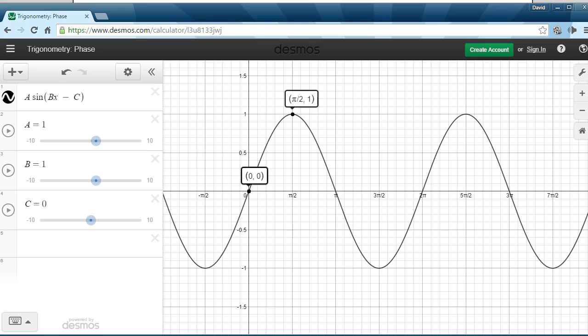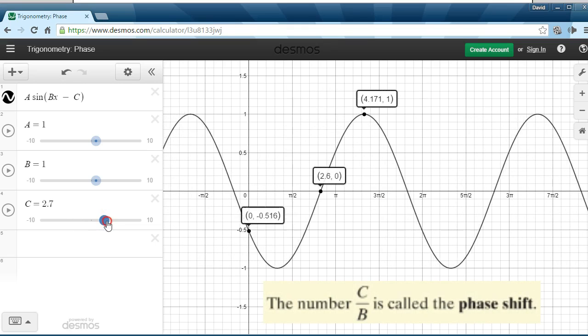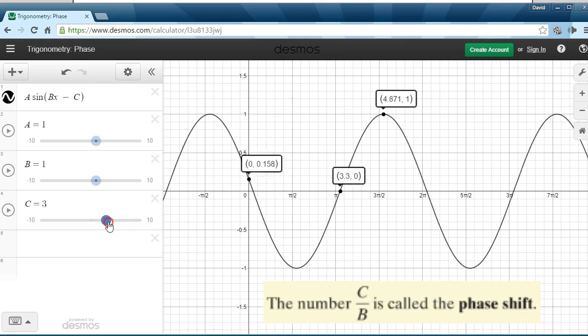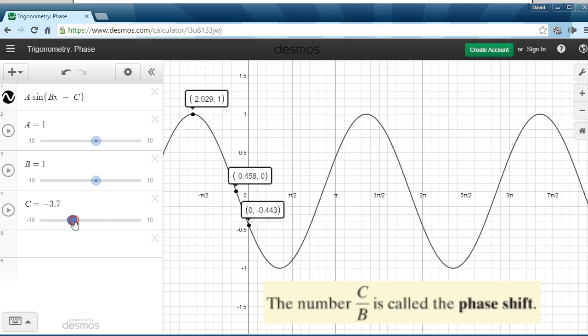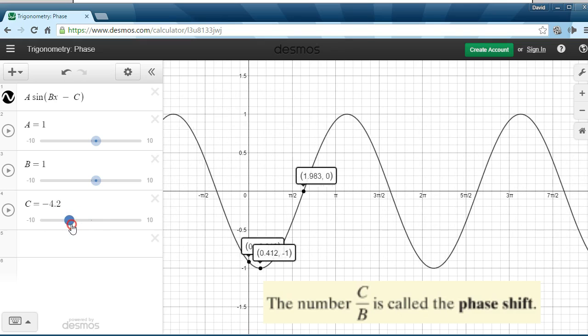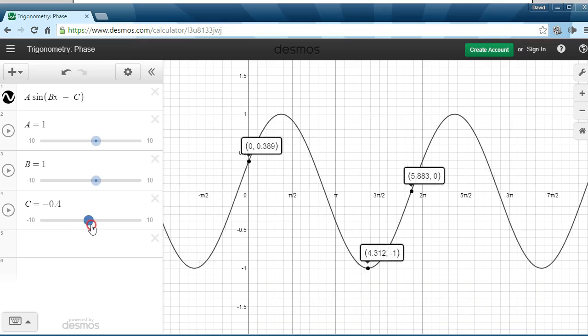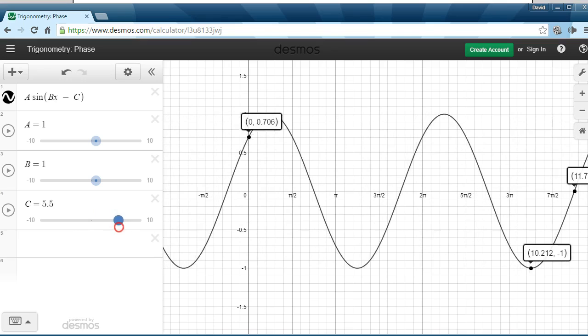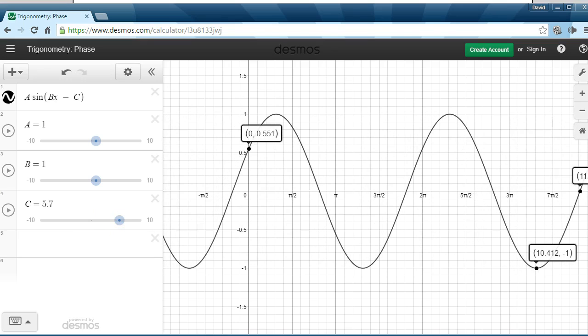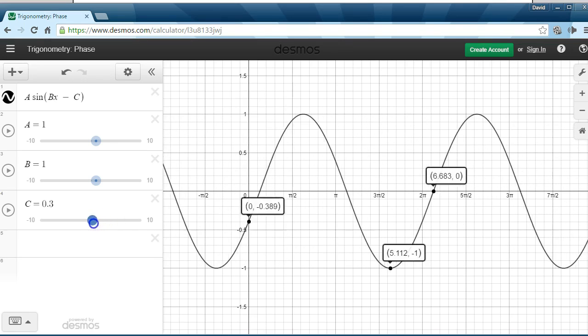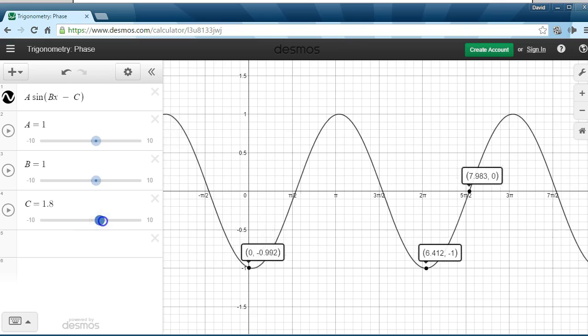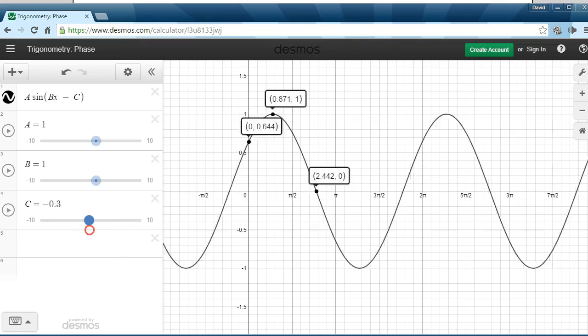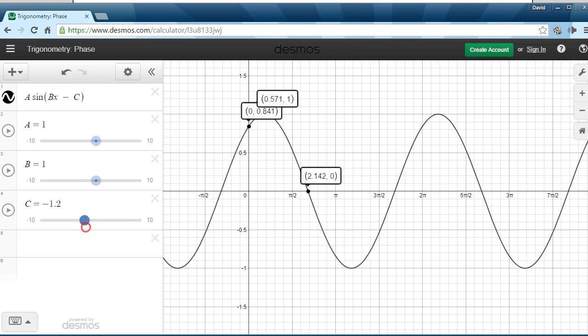And finally, C in conjunction with B, they do something called a phase shift. And we are moving the function to the left and right based on what C is. Notice if C gets bigger, as I make C larger, it's moving to the right, but it's a negative C. So because C is negative, it looks like we're moving in the direction as C changes, and that's true, but only because C is negative in the formula.